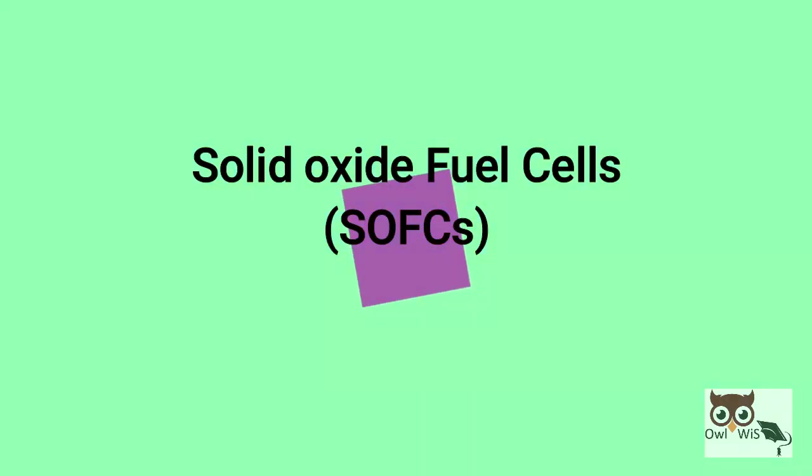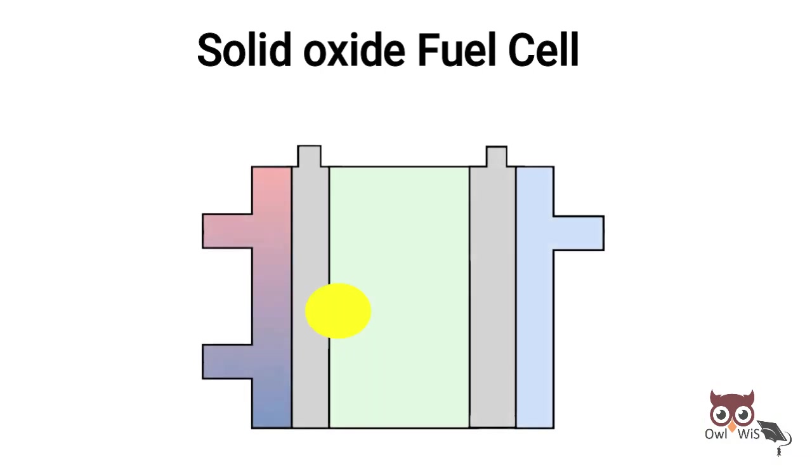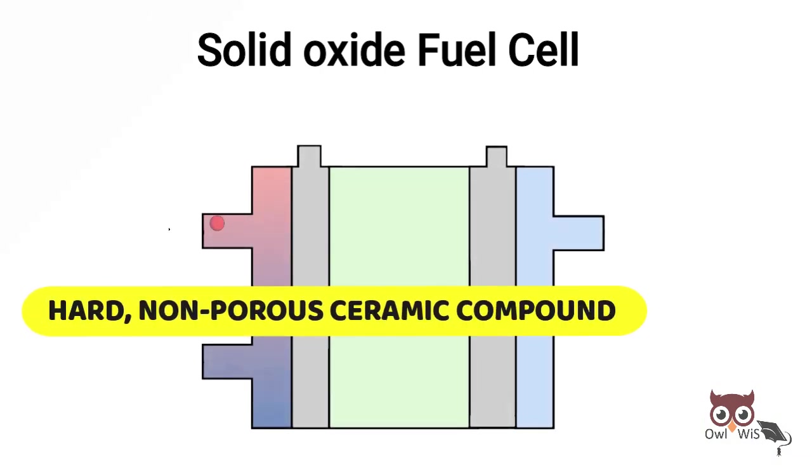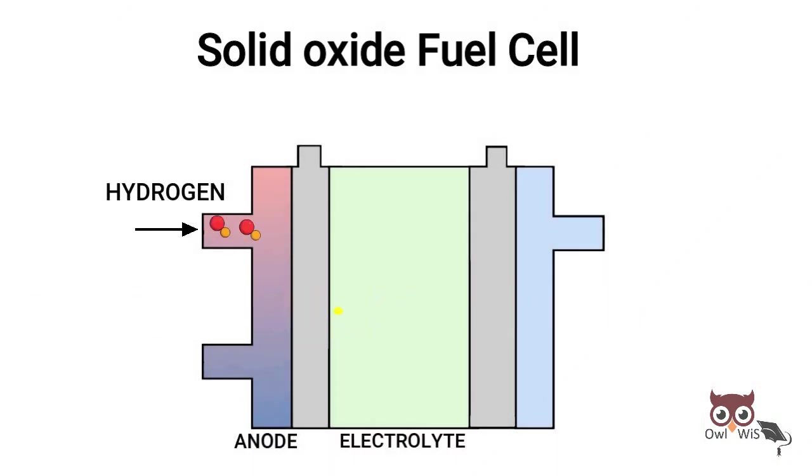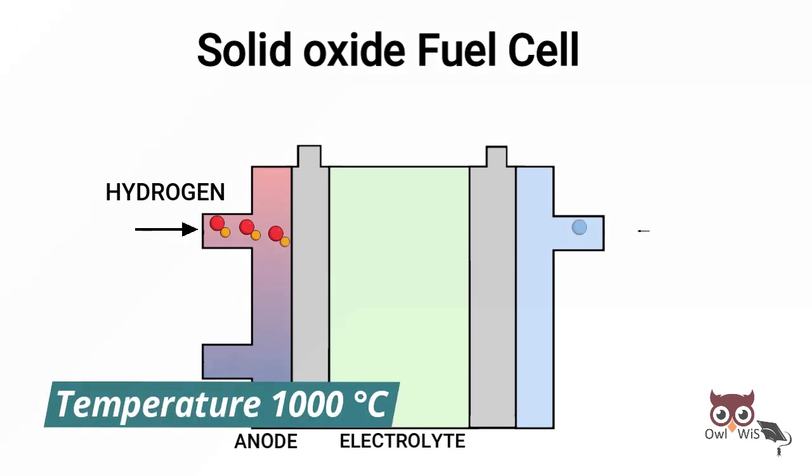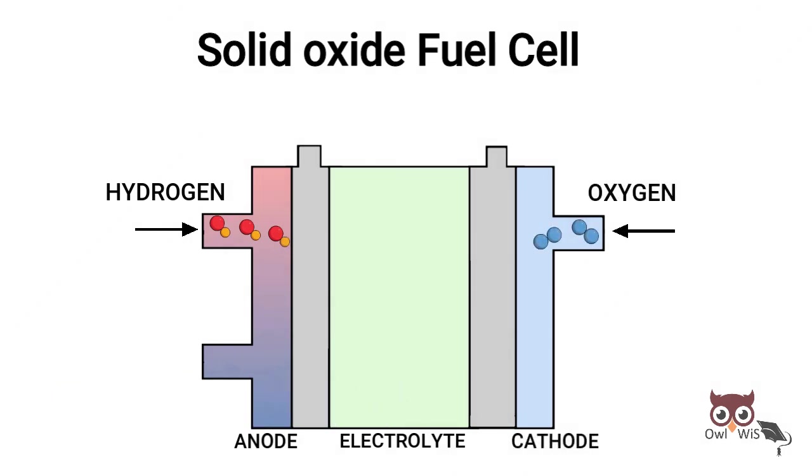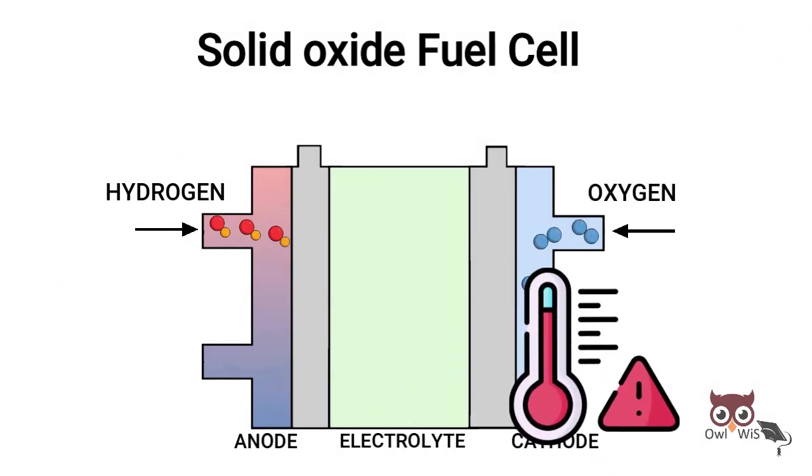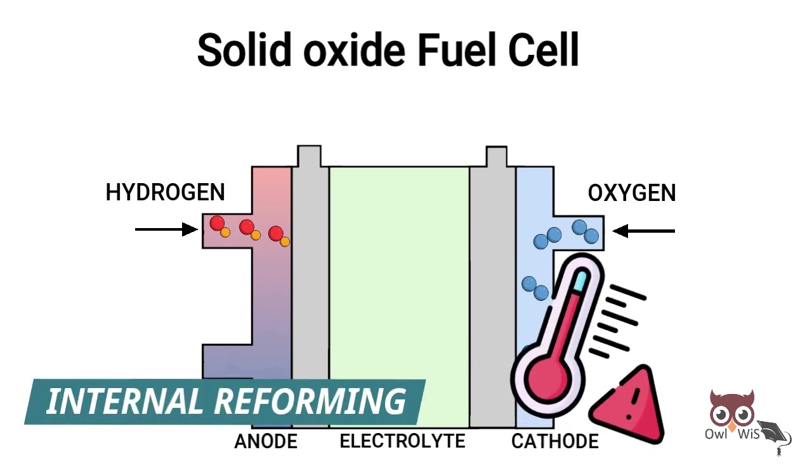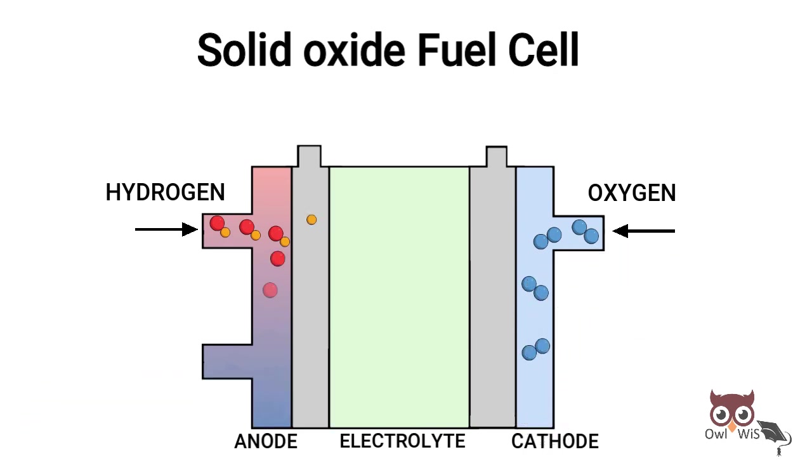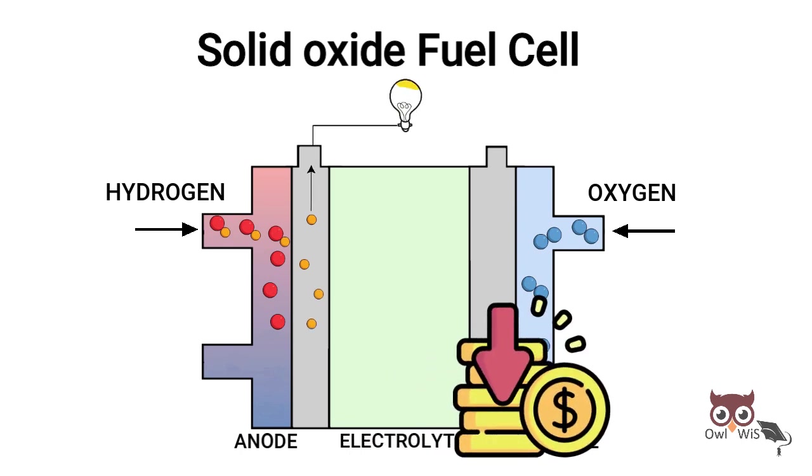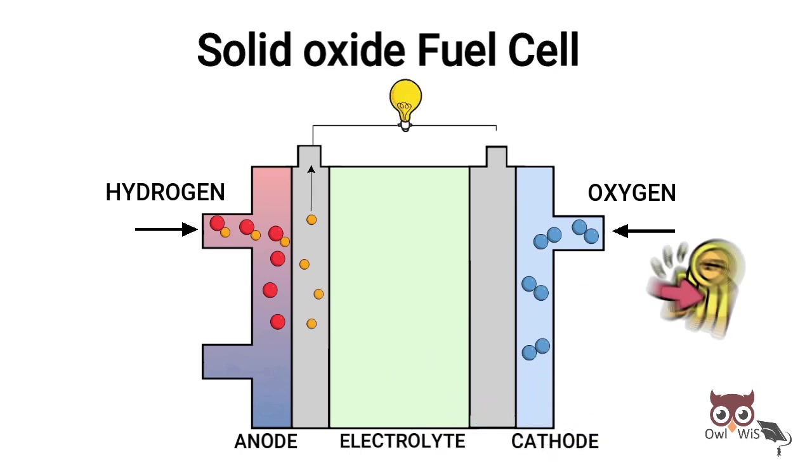Solid Oxide Fuel Cells use a hard, non-porous ceramic compound as electrolyte. They operate at very high temperatures, as high as 1000 degrees Celsius. Due to high temperature, it allows SOFCs to reform fuels internally, which enables the use of variety of fuels and reduces the cost associated with adding a reformer to the system.